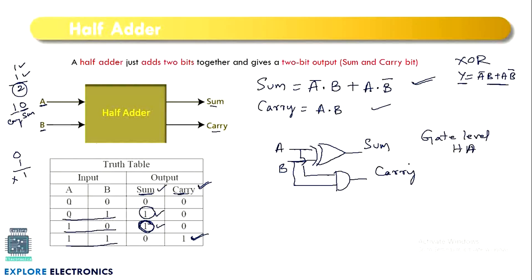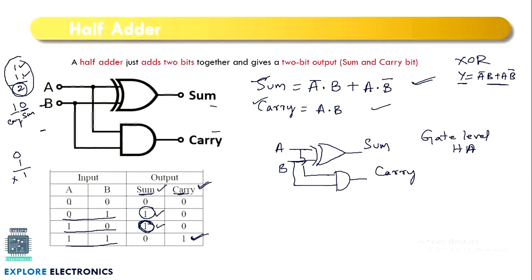Now we can write circuits for any digital circuit if we know the expression. The expression is derived by looking at the truth table, and the truth table is built by understanding how the functionality actually works. Now let us move on to the full adder circuit.